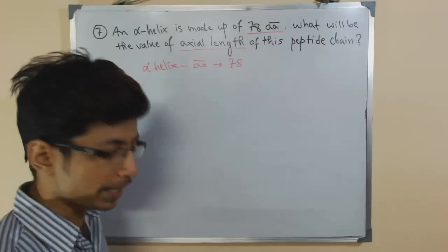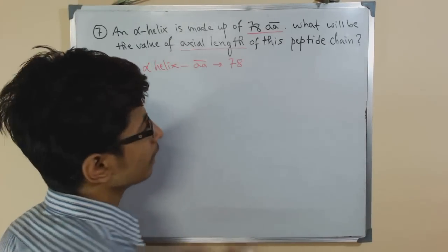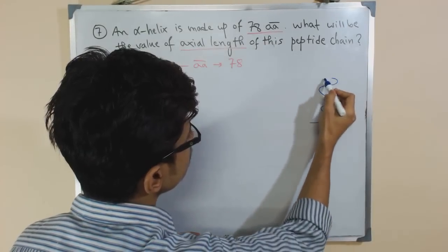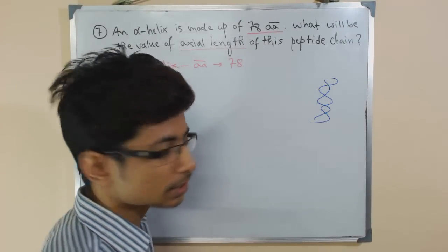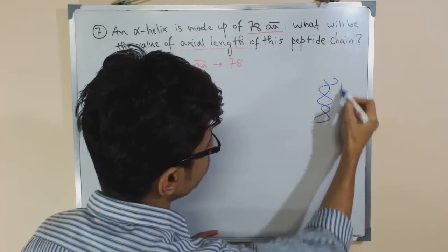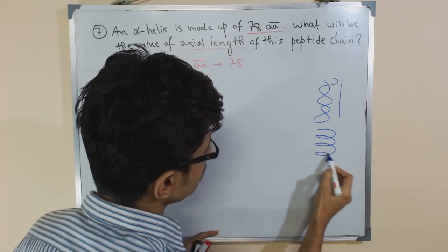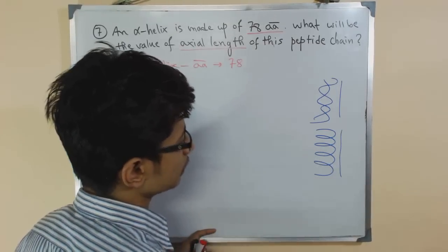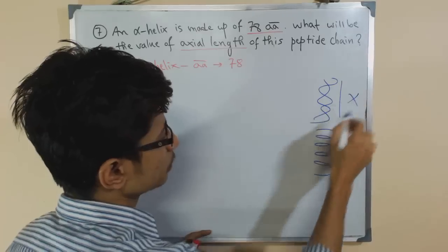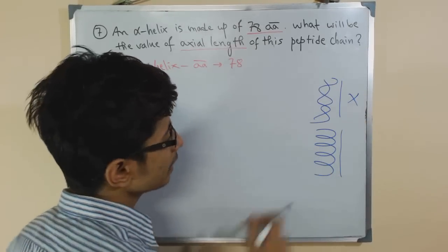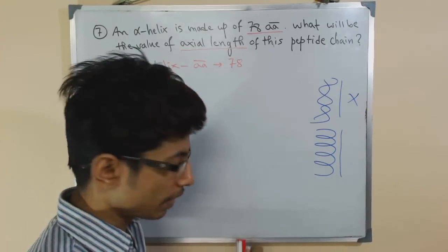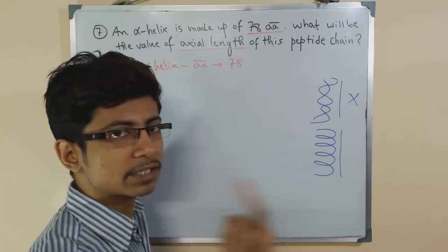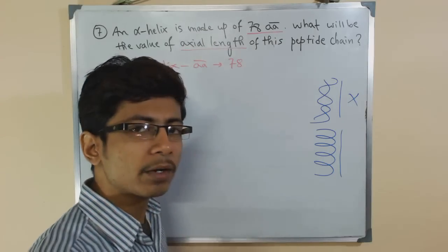Now, what do we mean by alpha helix? A helical structure is a spiral structure — something like this. Alpha helix forms a structure similar to DNA but distinct from it. When you look at the alpha helical structure, you can see it is turning and coiling — it is a helix.